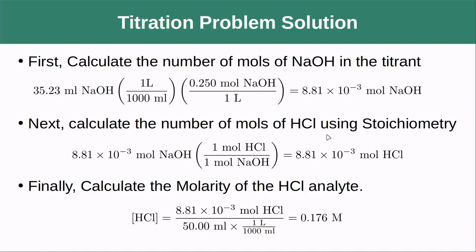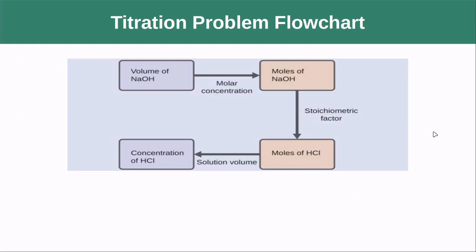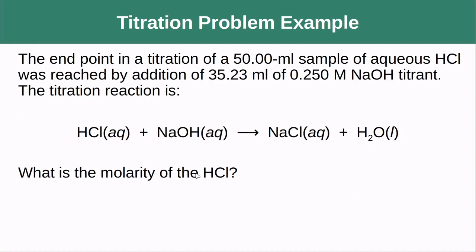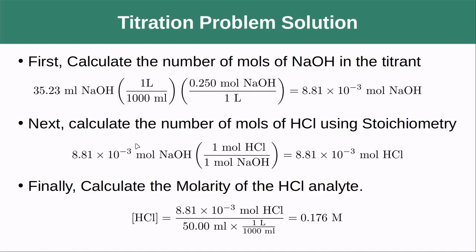Next, we're going to calculate the moles of HCl using stoichiometry. If we inspect our equation, we can see that for every one mole of sodium hydroxide consumed, we also consume one mole of HCl. So this is a pretty easy one, but do not take this step for granted — it will not always be a one-to-one reaction. So we take the moles of NaOH, apply the 1:1 ratio, and we still have 8.81 × 10⁻³ moles of HCl in our sample.